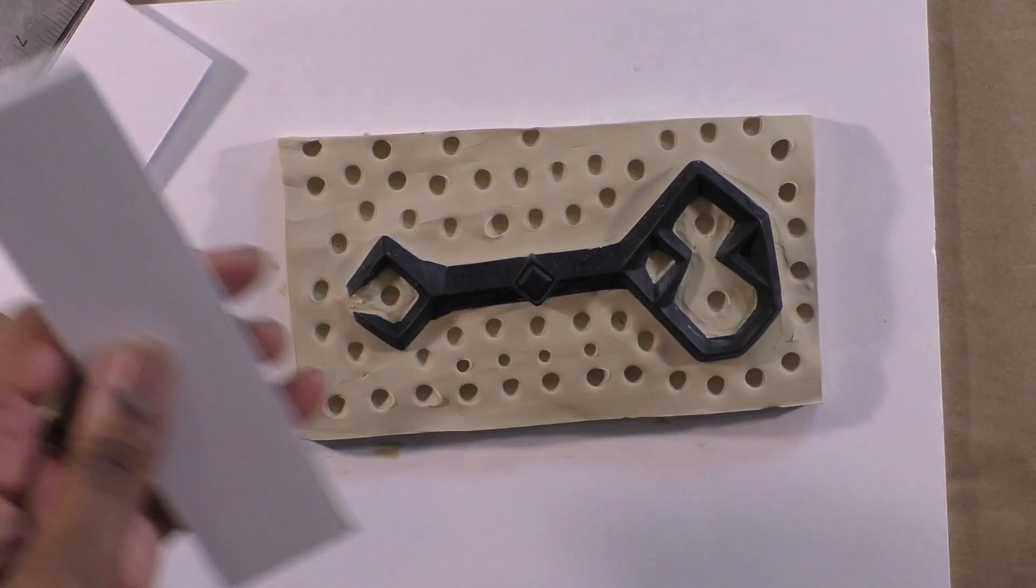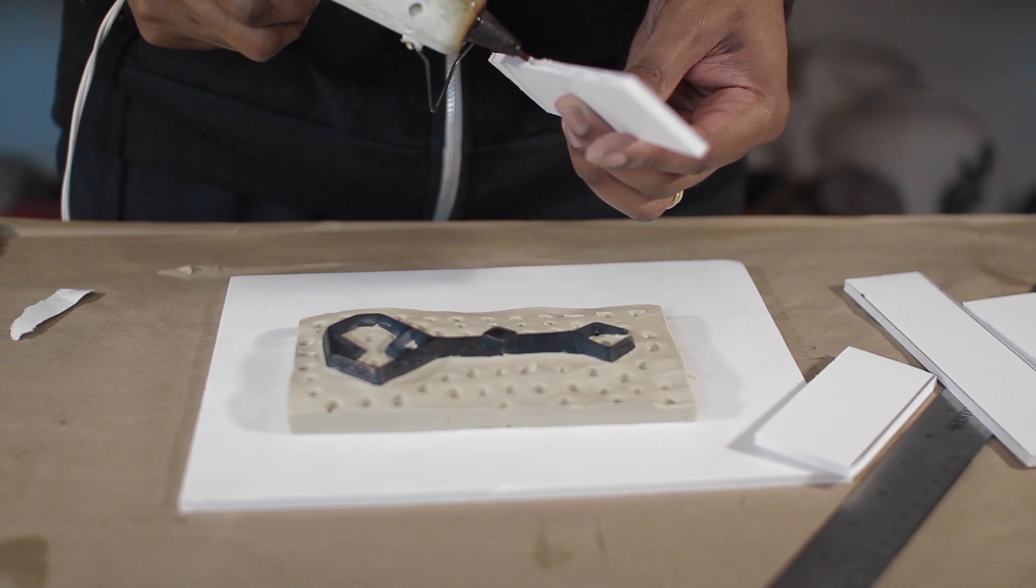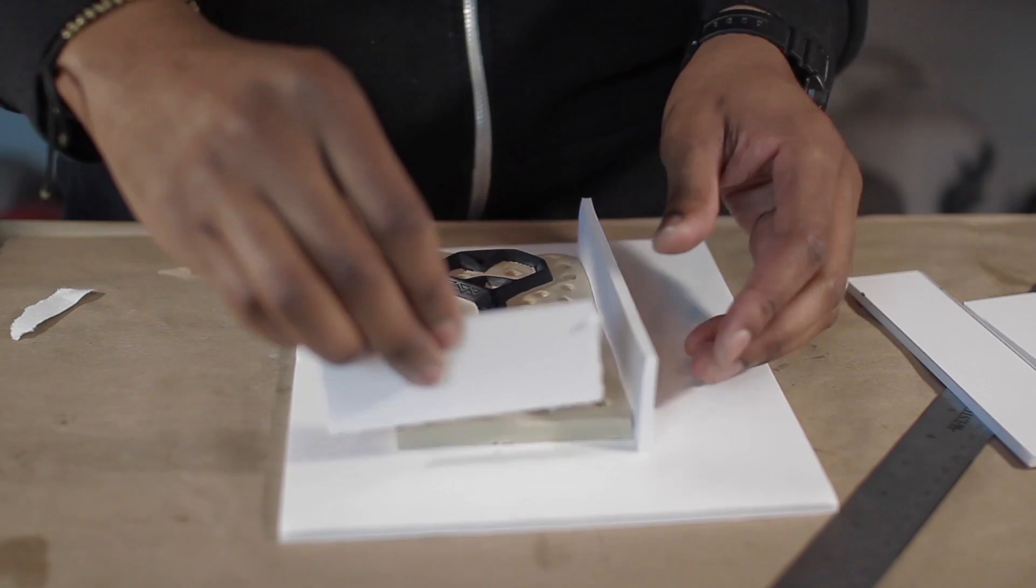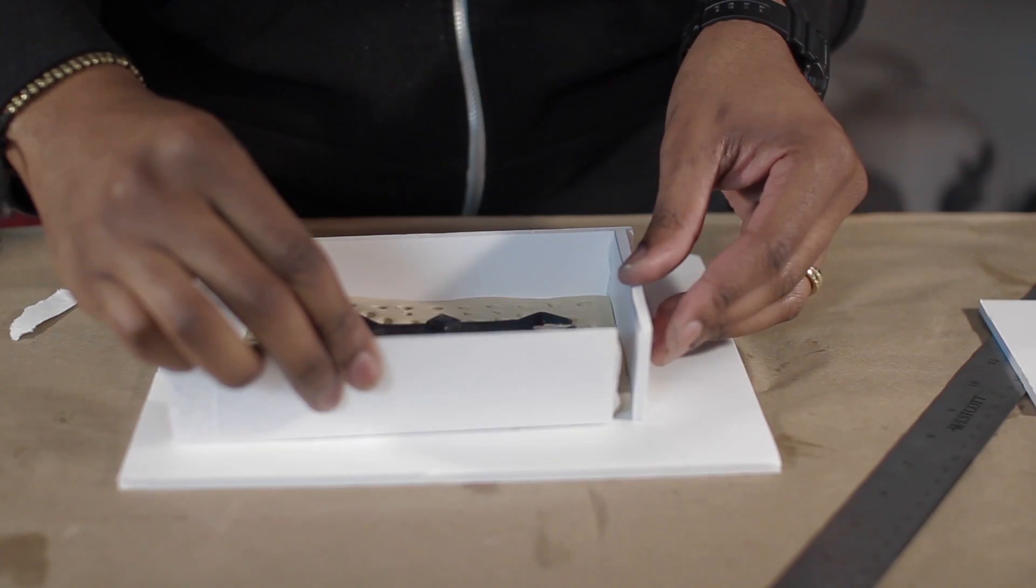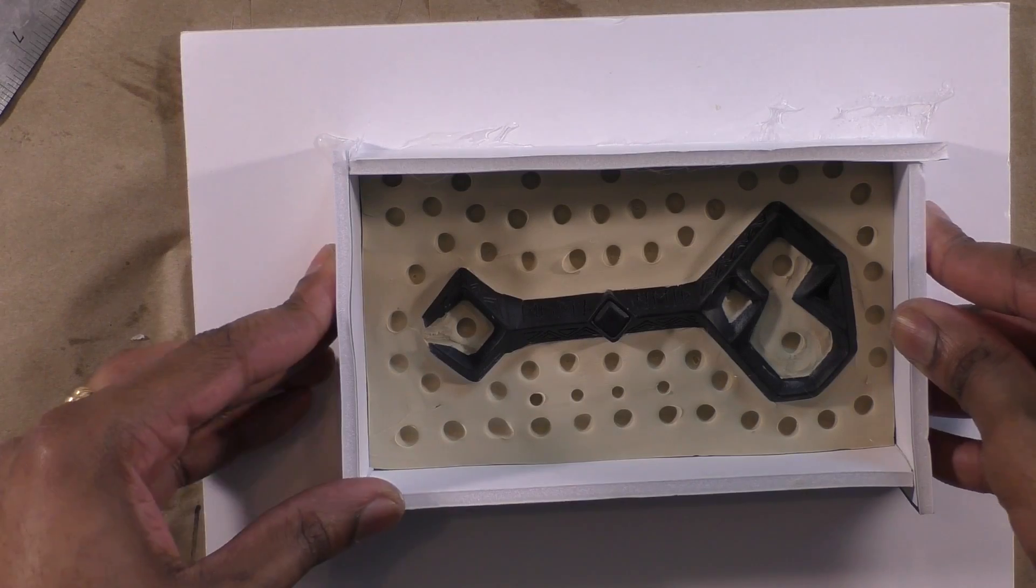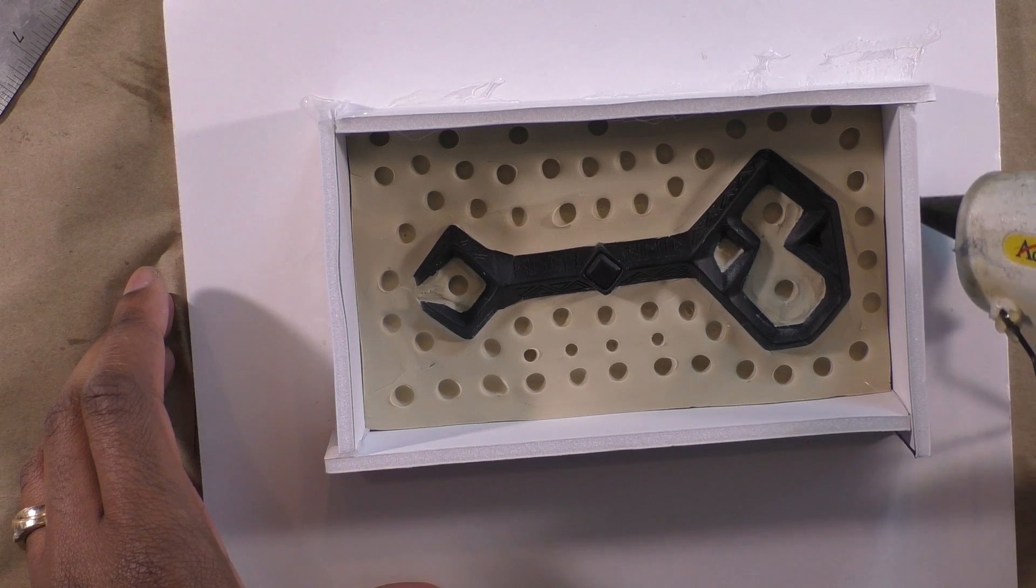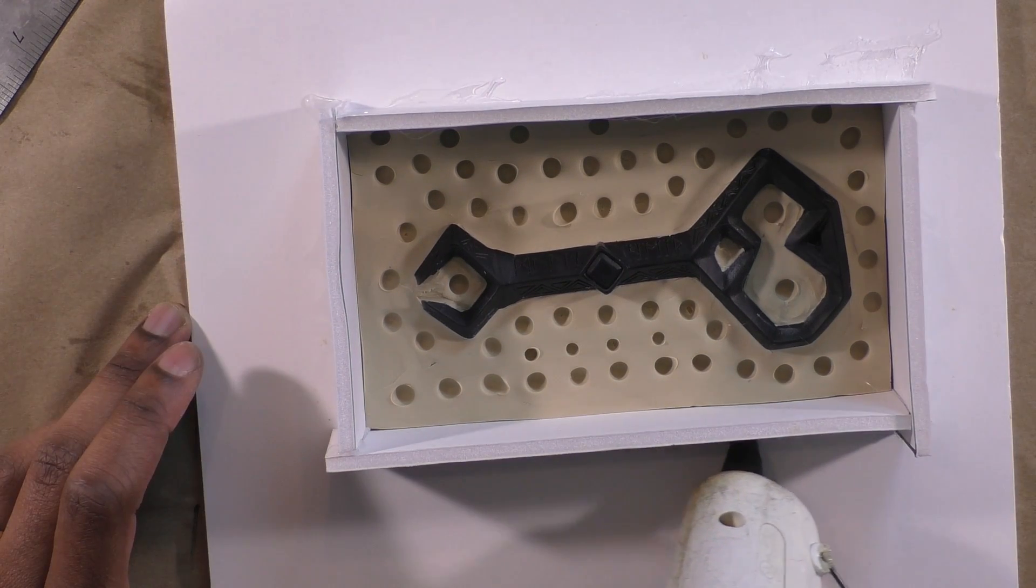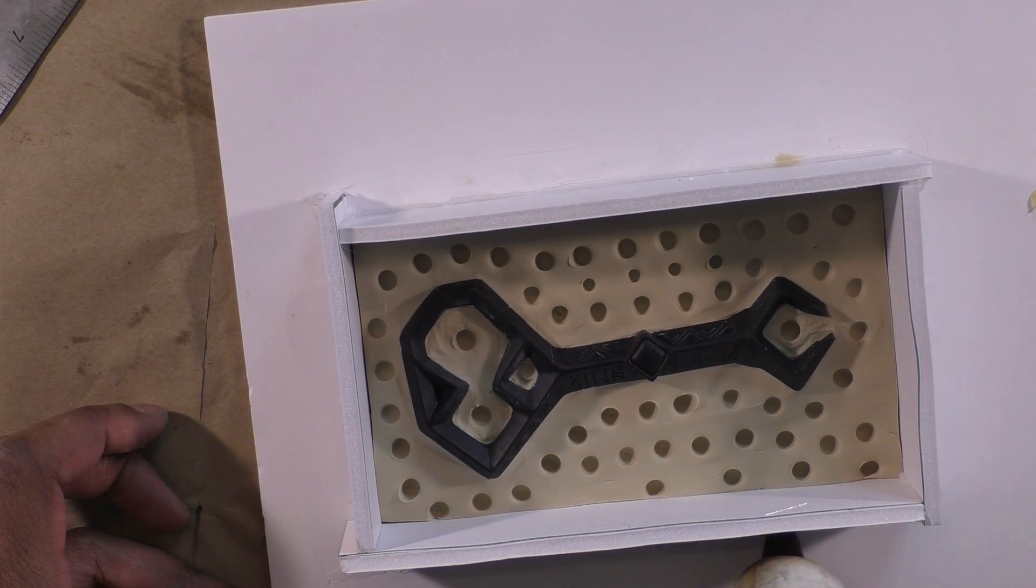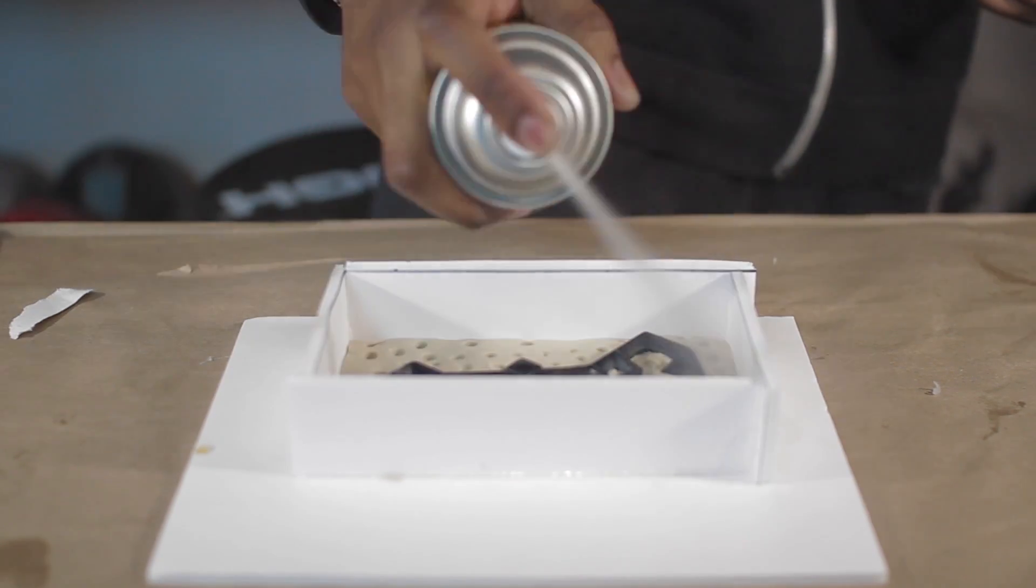I also used one of my sculpting tools to create registration holes in the clay. Once the clay was ready, I cut up some foam board to hot glue in place around the clay to act as walls for when I pour in the silicone. I also applied hot glue around the outer edges of the box to seal off any openings or gaps and to ensure I do not have any leaks. Finally, I sprayed some mold release and allowed it to dry while I mixed up silicone.